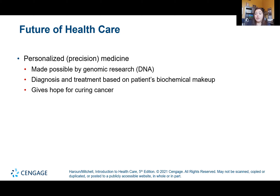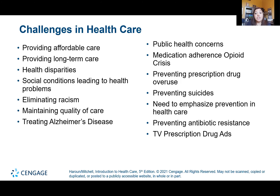That blood test helps us understand how a person metabolizes different types of medications. Results are color-coded — red means don't use these, the person doesn't metabolize it well or metabolizes it too fast for it to build up; yellow means use certain ones with caution; and green means the person should respond really well. It's all based on the person's DNA and how their liver metabolizes medications. This approach to diagnosis and treatment based on biochemical makeup also gives us hope for curing cancers.